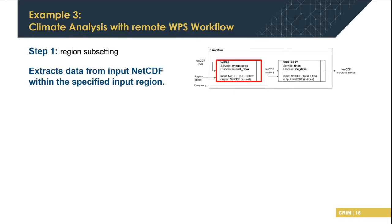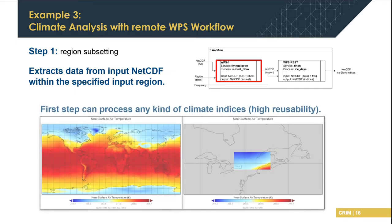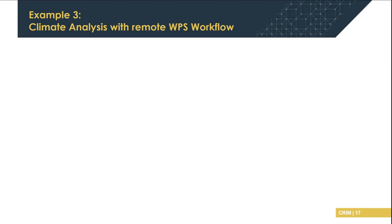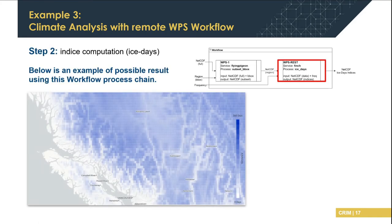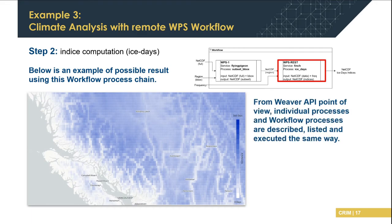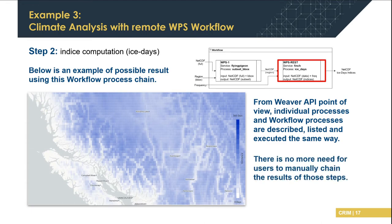When running the workflow through Weaver, each step is directly processed based on the CWL requirements, and Weaver manages the transmission of intermediate results depending on where the processes are running. The first step — region subsetting — extracts data from the input NetCDF and produces a NetCDF only for the subsetting region. This process is highly reusable and can be used for any indices. When combined with the second step computing heat days, we can obtain patch-based processing of a given region. Using Weaver's API, executing both the individual processes and the full workflow is exactly the same, making it very easy for users who no longer need to chain processes manually.